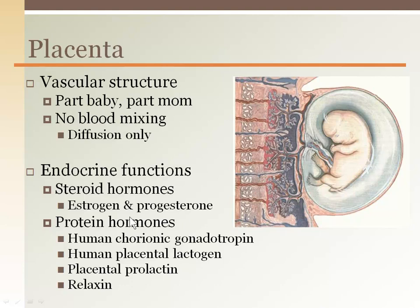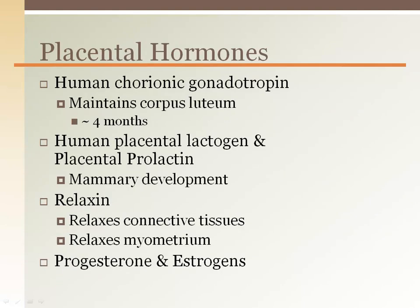Progesterone increases dramatically — the name progesterone means progestation. Human chorionic gonadotropin promotes progesterone production by the corpus luteum and prevents rejection of the embryo by the mother's immune system. Placental hormones facilitate breast development in preparation for lactation. Other placental hormones work with the mother's growth hormone to produce a diabetes-like effect on the mother's body, sparing glucose and lipids for the baby.